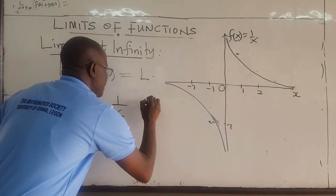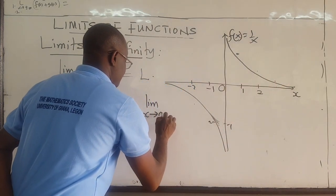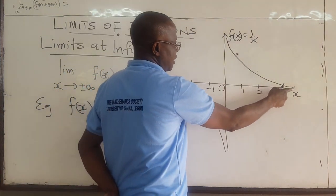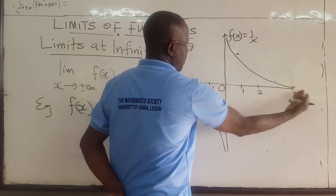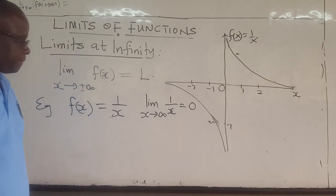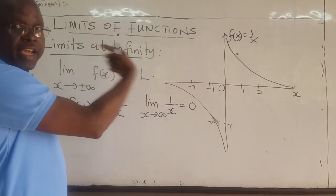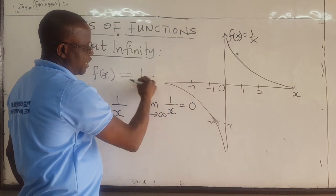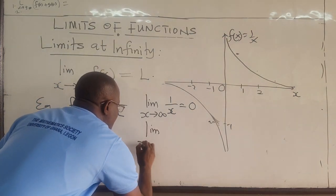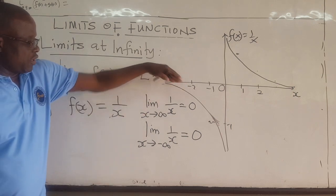Notice that the limit as x approaches positive infinity of 1 over x — in other words, as x gets larger and larger, this function is decreasing and decreasing. It's approaching 0. It's approaching the horizontal line. So as x approaches positive infinity, 1 over x goes to 0. And the same thing: as x grows without bound in the negative direction, the function is getting closer and closer to this horizontal line, to 0. So the limit as x approaches negative infinity of 1 over x is also equal to 0.